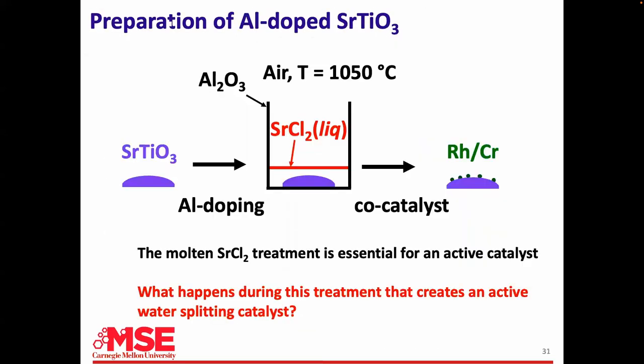How is it done? You take your catalyst, put it into an aluminum crucible, put in some strontium chloride, heat it up until the salt melts, then wash that away and add some co-catalyst at the end. Why does this work? No one ever seemed to care — there are probably hundreds of papers published reporting this preparation, but it's not obvious what's going on.